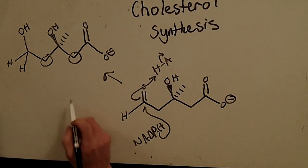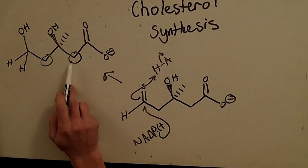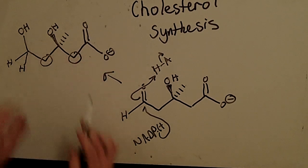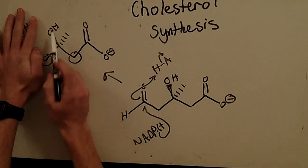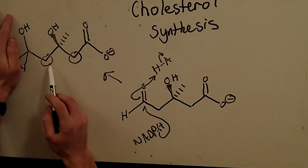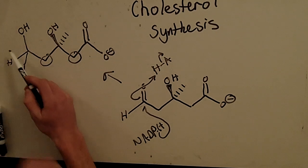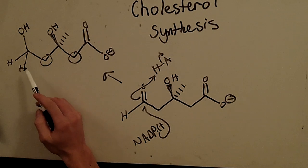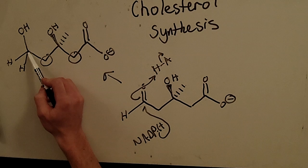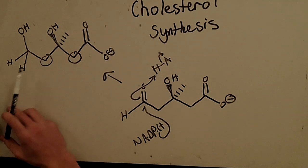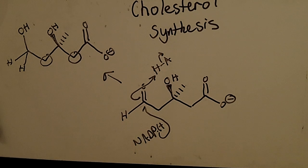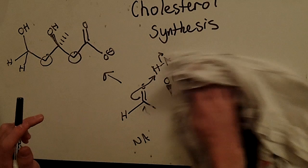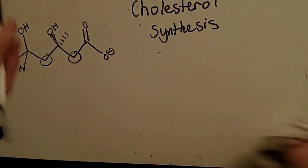Let's review one more time. We had the Claisen condensation where two acetyl-CoAs were condensed, then the aldol reaction where the alcohol was formed, and then HMG-CoA reductase reduced twice here to cause an alcohol group from what was an acetyl-CoA carbonyl group. Don't forget — water had to attack to cause the carboxylic acid group. That's it for part one. We'll see you in the next parts on our way to cholesterol. Thanks for watching!